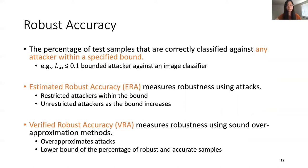For example, attackers against an image classifier can be bounded by LP norm. We define two types of robust accuracy. First, estimated robust accuracy (ERA) measures robustness using known attacks. We can measure ERA against restricted attackers and also measure how ERA drops as the bound increases for unrestricted attackers. The second metric is verified robust accuracy (VRA), which measures robustness using sound over-approximation methods that provide a lower bound on the percentage of robust and accurate samples.